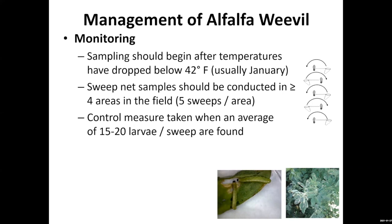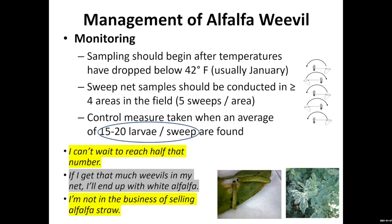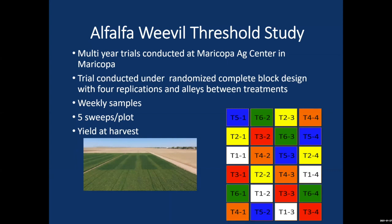We normally sample these insects by sweeping the fields starting in early winter. The older threshold was set at 15 to 20 larvae per sweep, and this wasn't practical at all — feedback from growers early in our projects was 'if I get that many, I'll have white alfalfa.' So we studied the economic threshold, work that started back in 1975. We manipulated populations at different plots at MAC over the years using insecticide applications based on their efficacy to create different densities of this population.